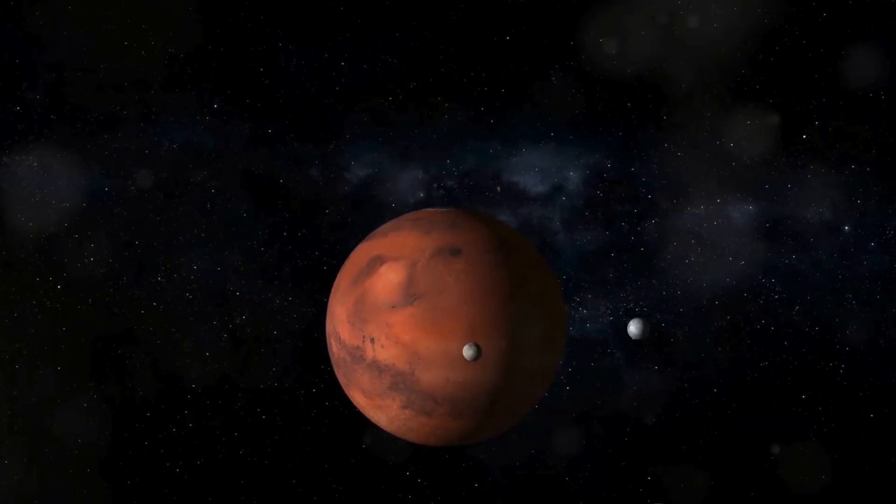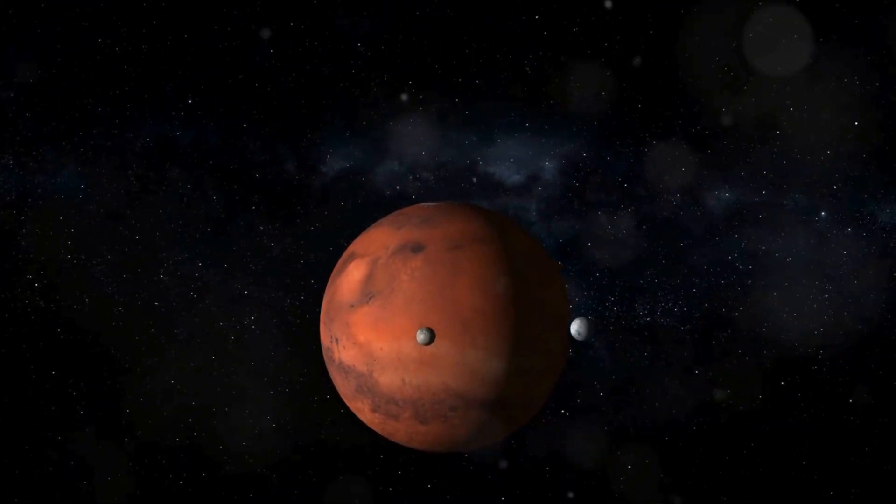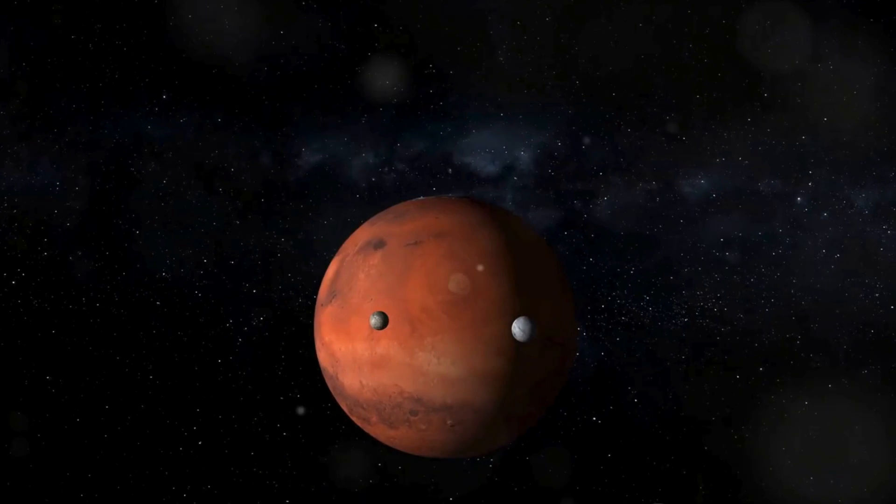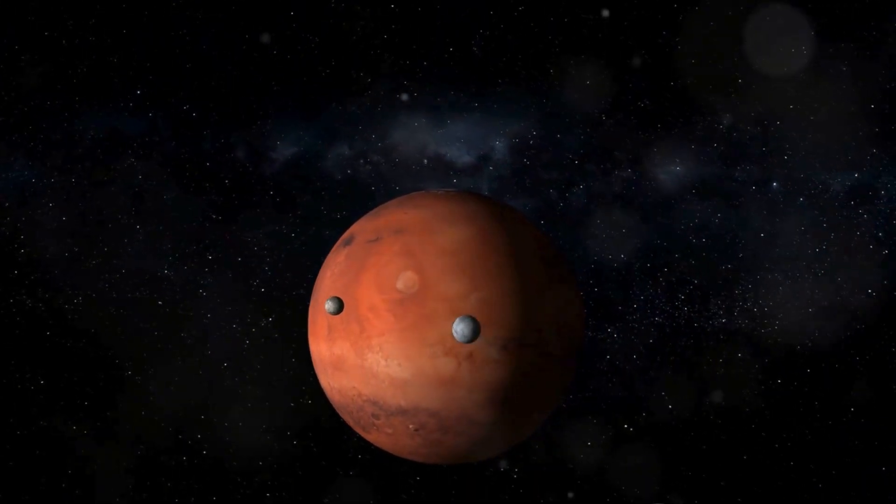Due to the small size of its moons, Mars witnesses what we might call annular or ring eclipses, with the sun still visible as a bright ring around the moon.